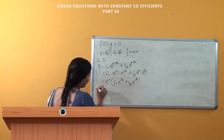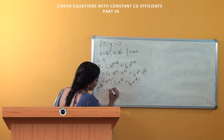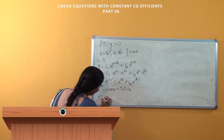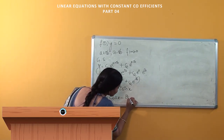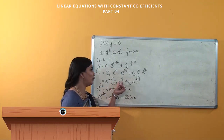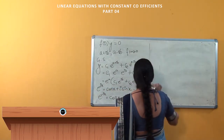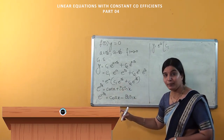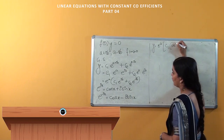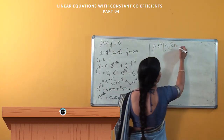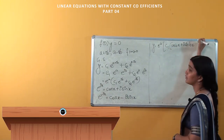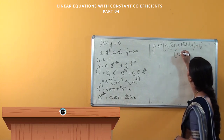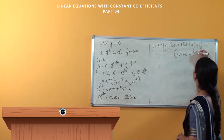We know that e^(ix) = cos(x) + i·sin(x), and e^(-ix) = cos(x) - i·sin(x). Here we have e^(ibx) and e^(-ibx), so substituting: y = e^(ax)·[c1·(cos(bx) + i·sin(bx)) + c2·(cos(bx) - i·sin(bx))].